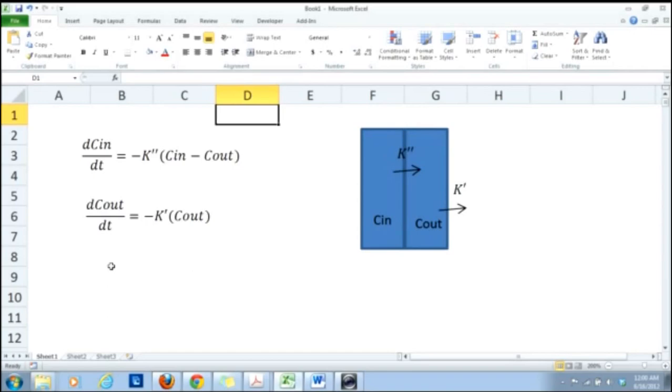For this particular video tutorial I have used the example of diffusion. Here I have defined two chambers, inside chamber and outside chamber. So there is a concentration of C_in in the inside chamber and C_out in the outside chamber.